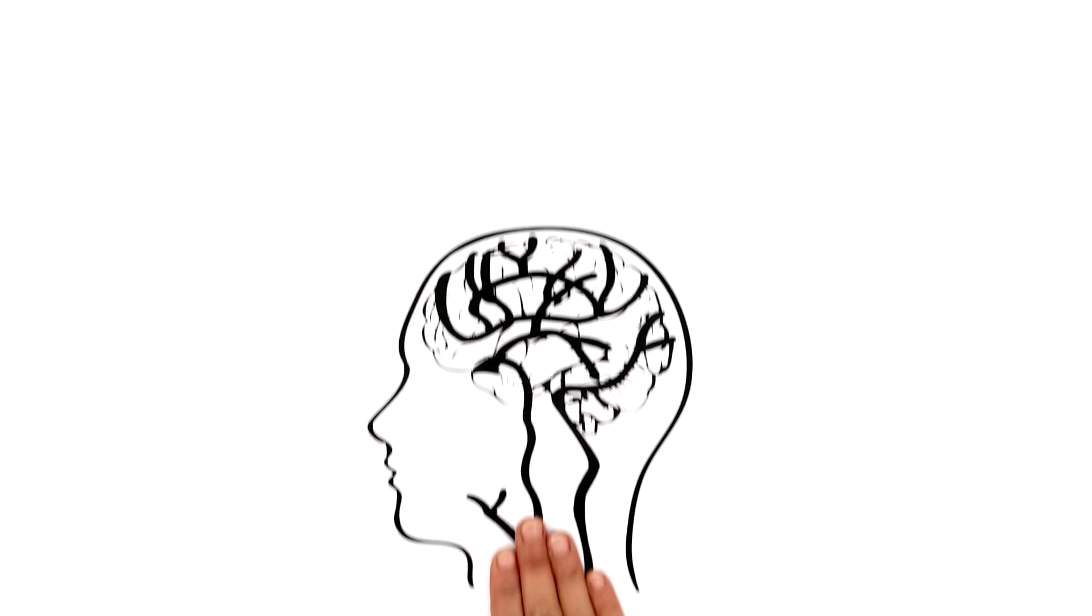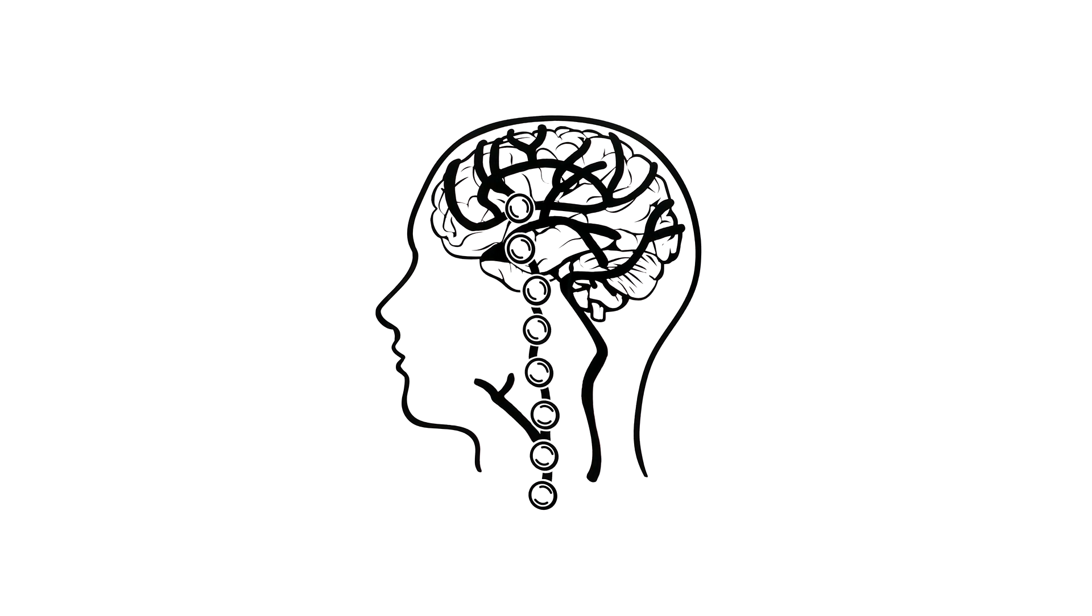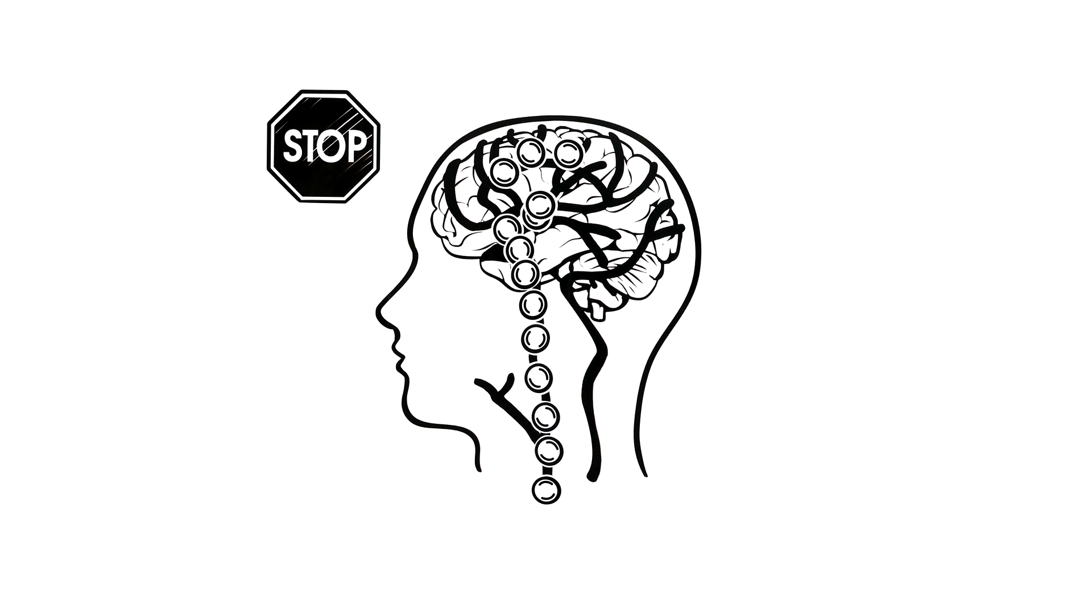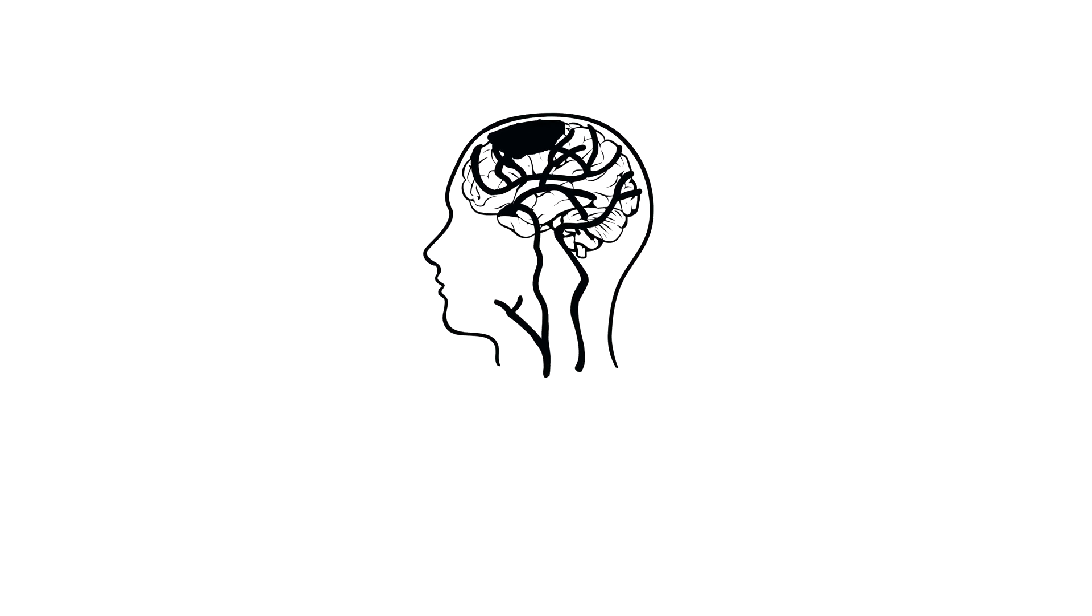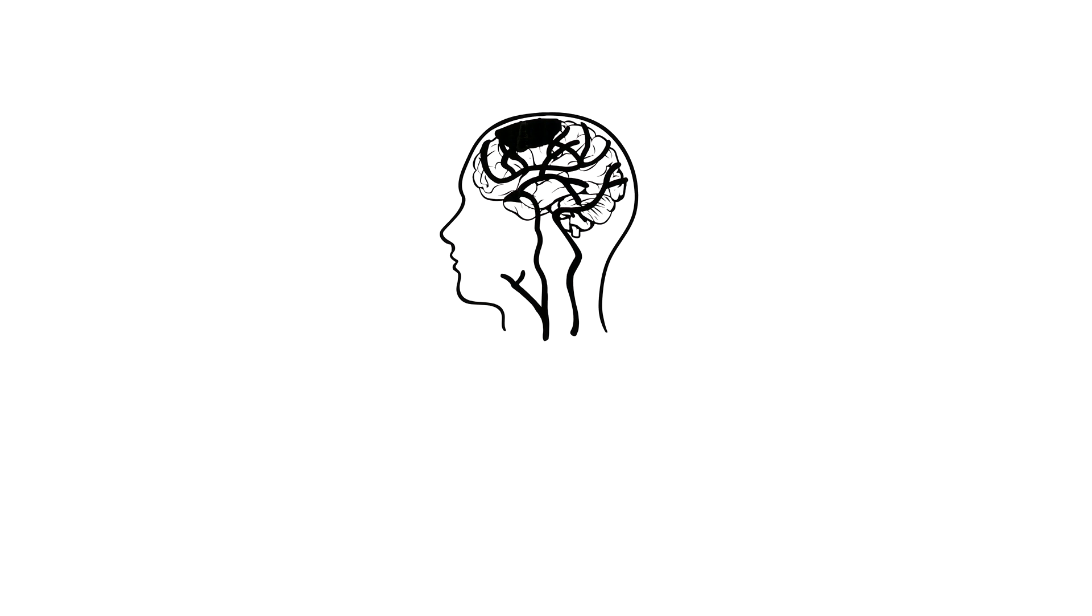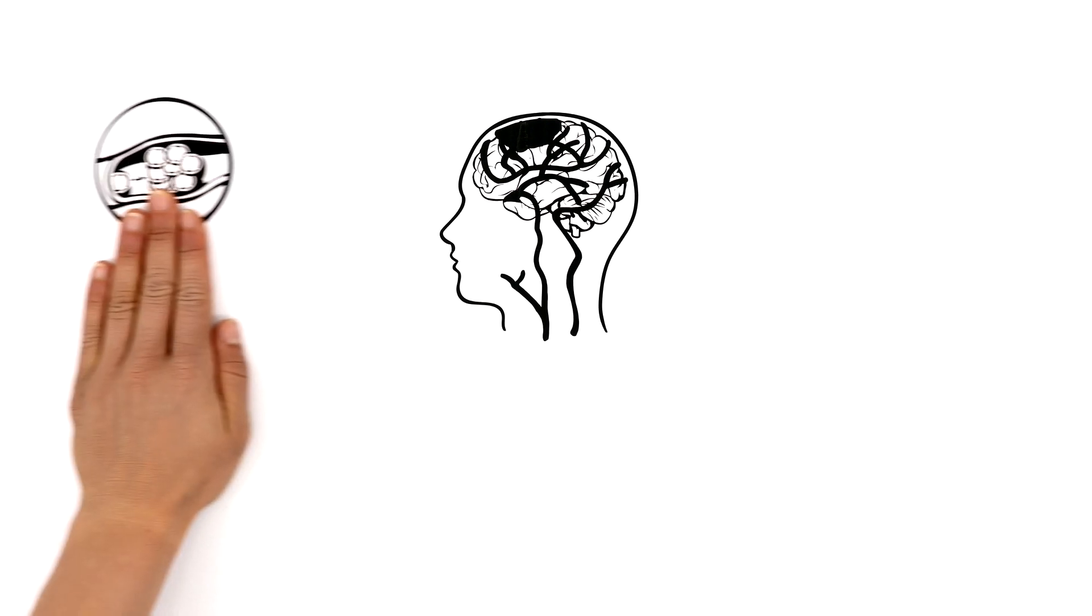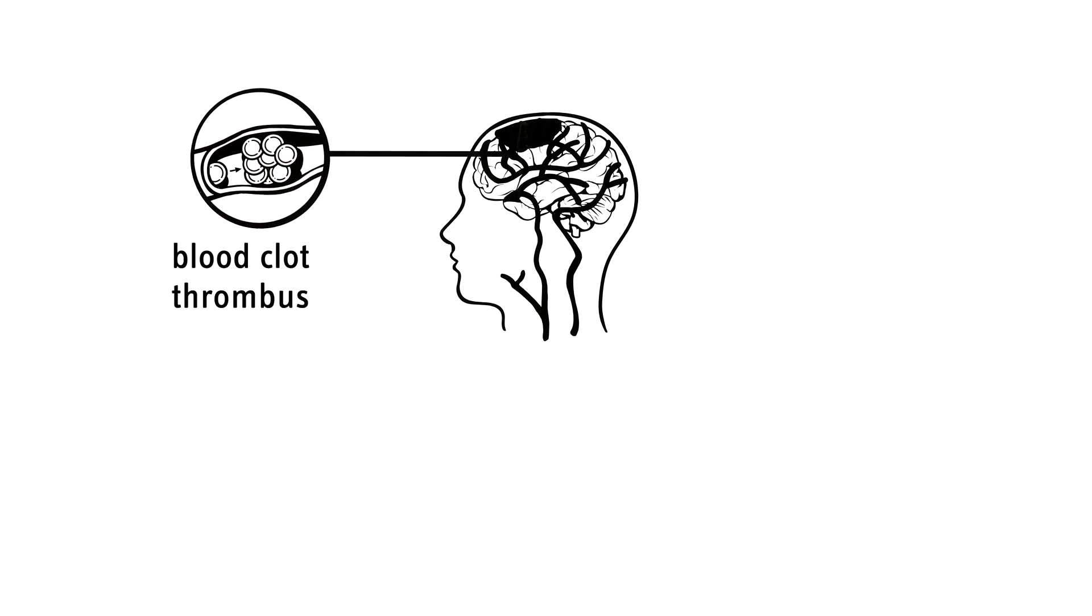In a stroke, the supply of oxygen and nutrients to the brain is disrupted. As a result, brain cells die. A stroke can have different causes. The two most common causes are when a blood clot or thrombus either blocks blood vessels in the brain or bursts a blood vessel and causes a brain hemorrhage.